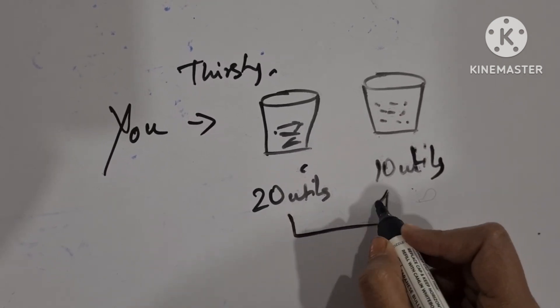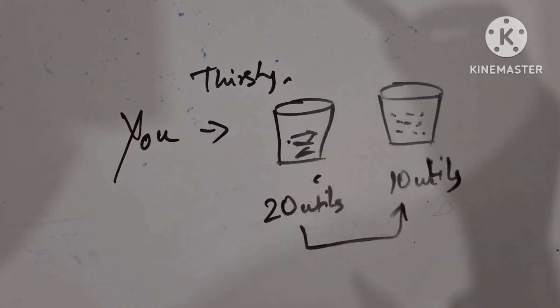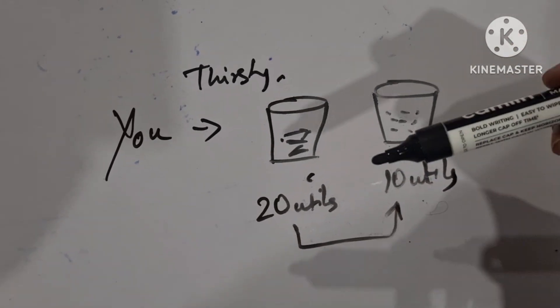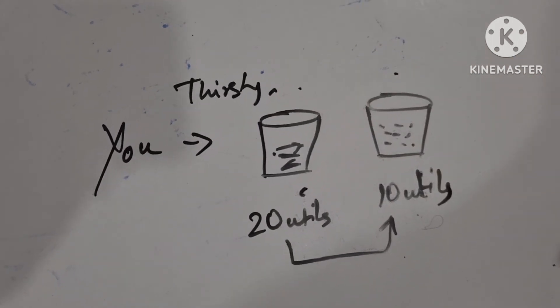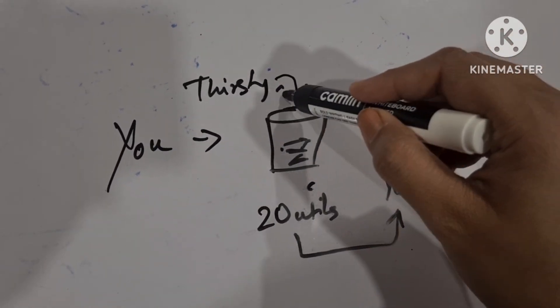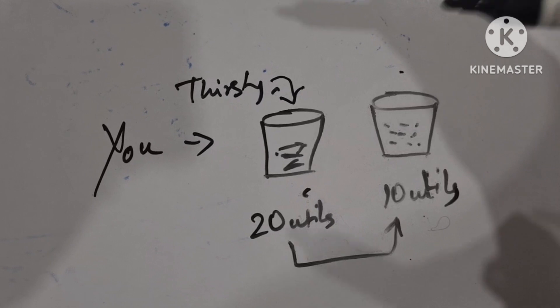Now why is there a fall in this utility? Because you are very thirsty. Now you think that you will take a lot of glasses of water. But after drinking one glass of water, your thirst is slightly reduced.